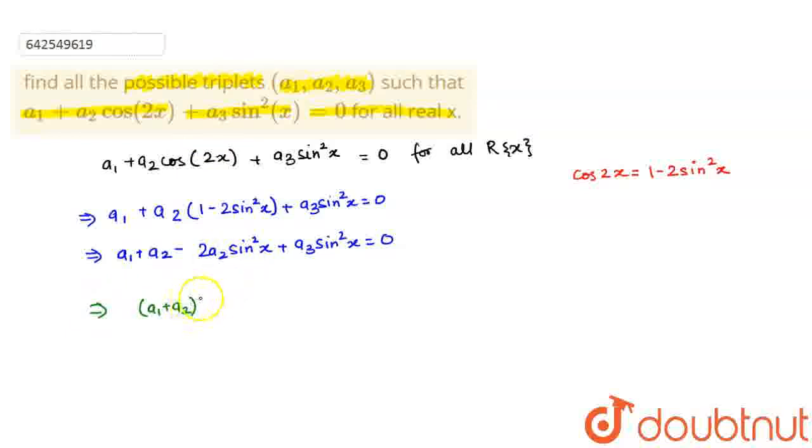And taking terms common from here, what do I get? Plus sin²(x)(a3 - 2a2) = 0. So there are three factors.